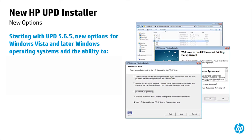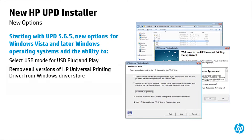Starting with UPD 5.6.5, new options for Windows Vista and later Windows operating systems add the ability to select USB Mode for USB Plug and Play, remove all versions of HP Universal Printing Driver from Windows Driver Store, and add HP Universal Printing Driver to Windows Driver Store.